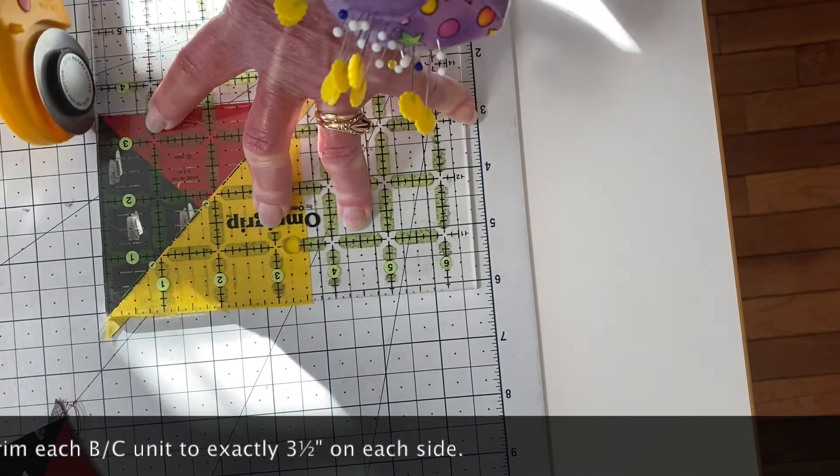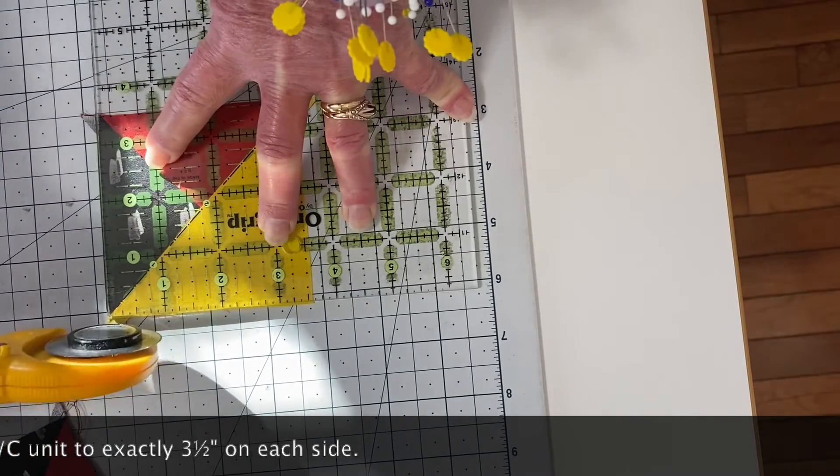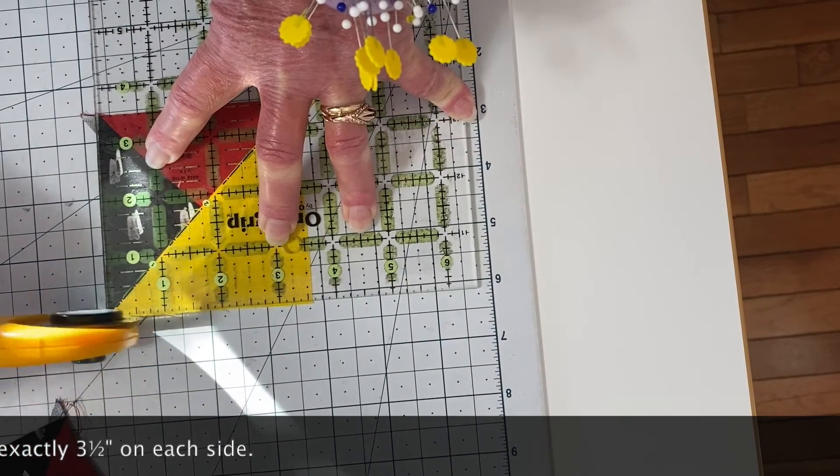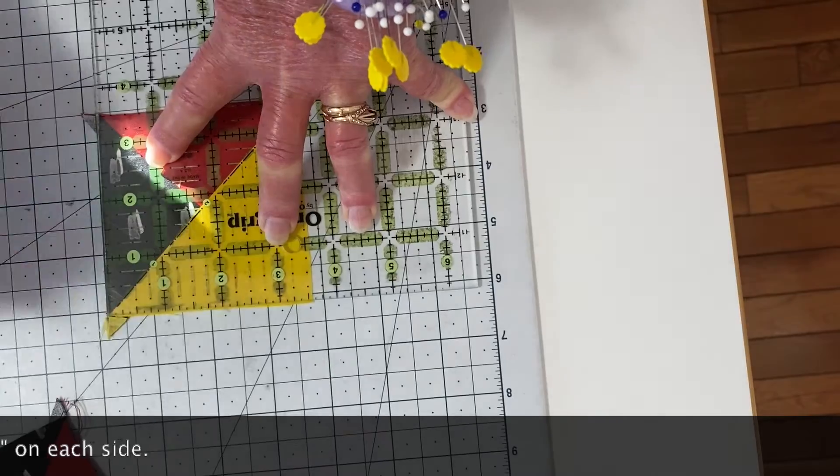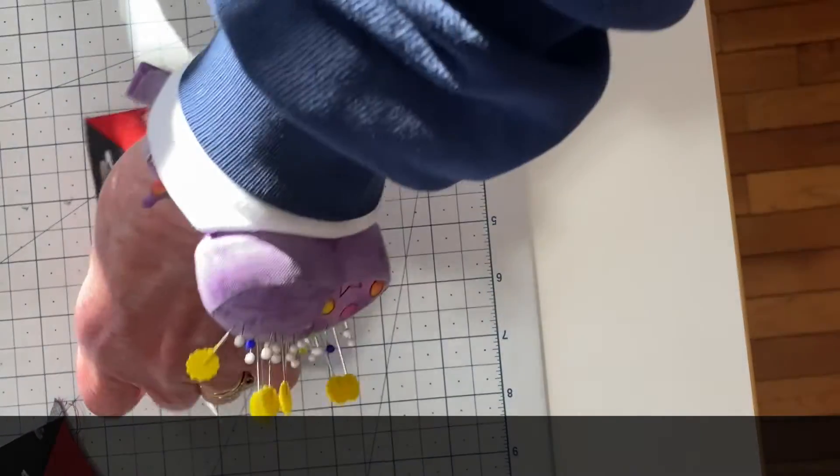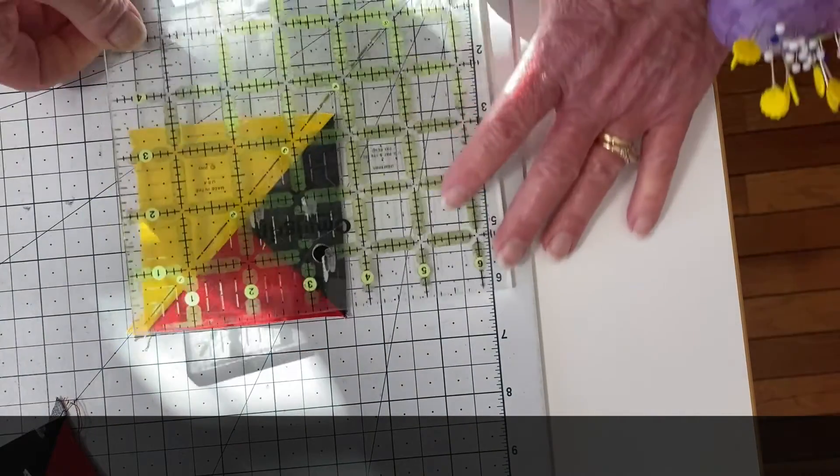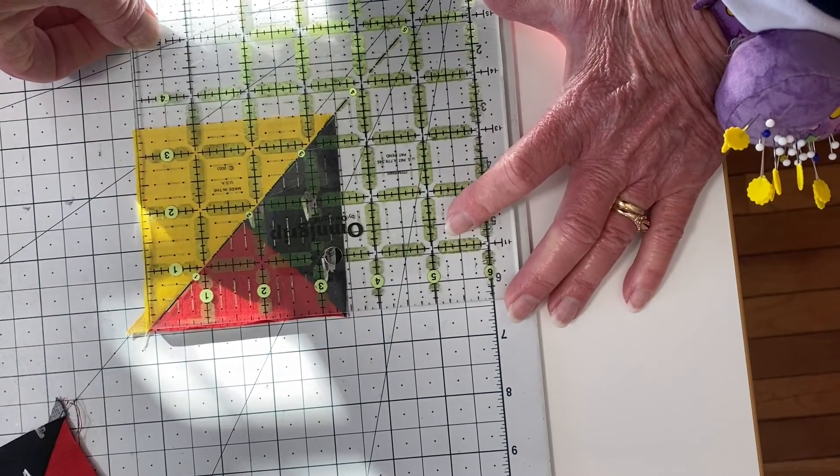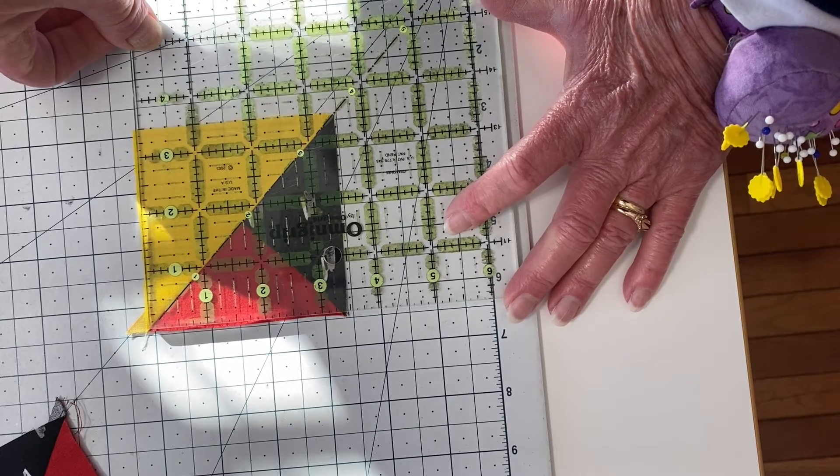So I've got a little to trim there. Just a little triangle to trim there. Just the slightest amount up there. So I trim that and I'm going to flip them around. We are trimming each of these to exactly three and a half.